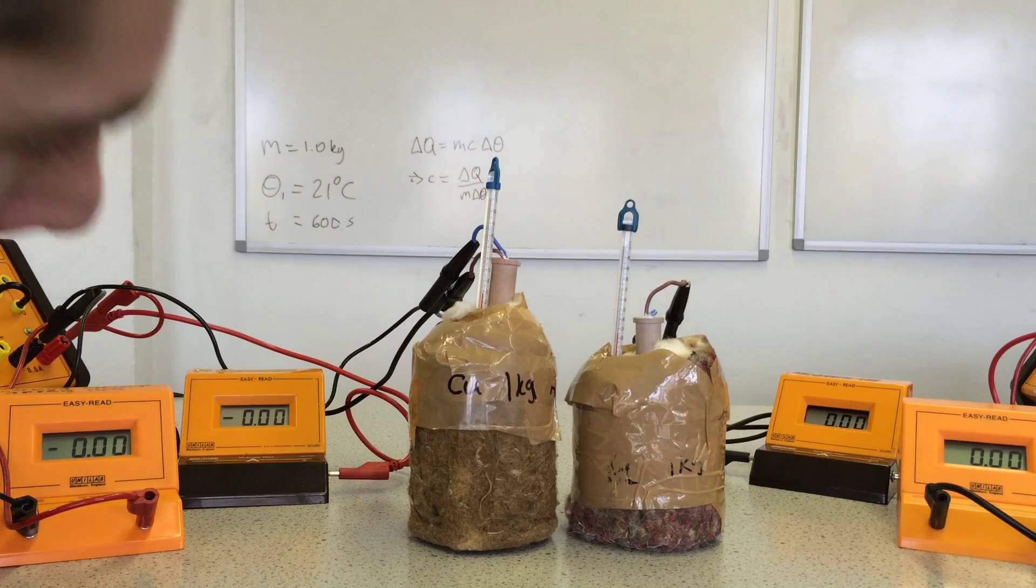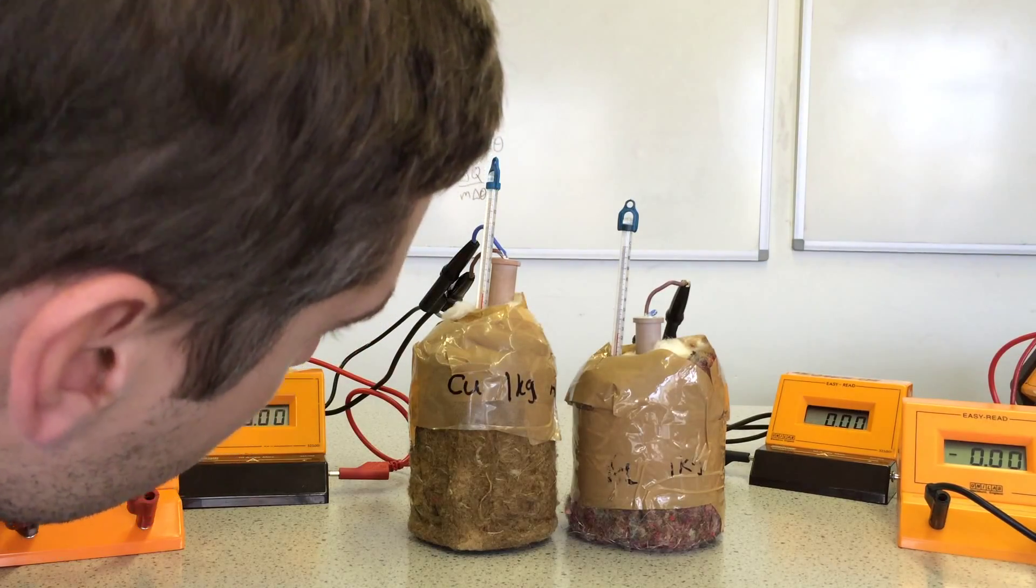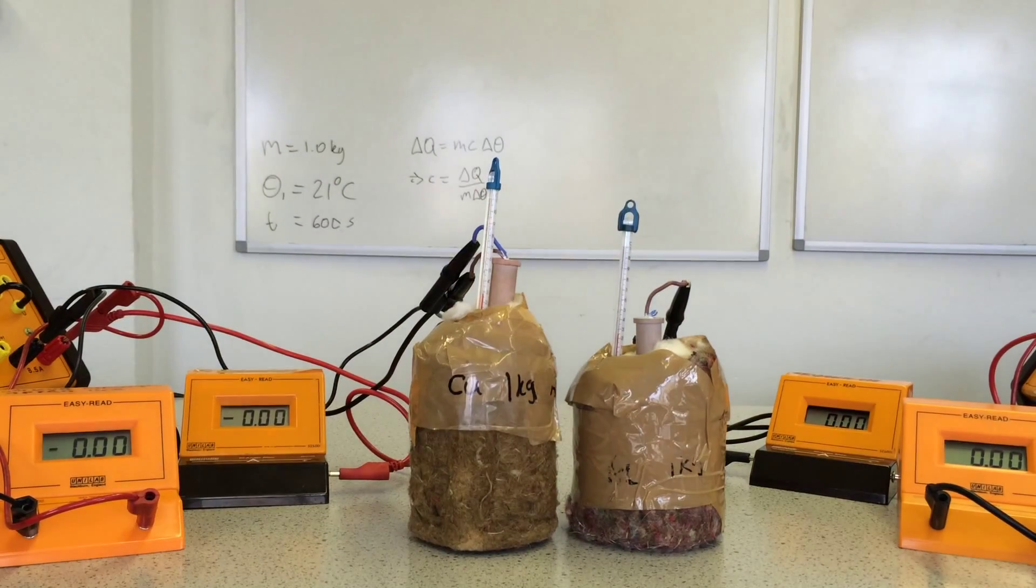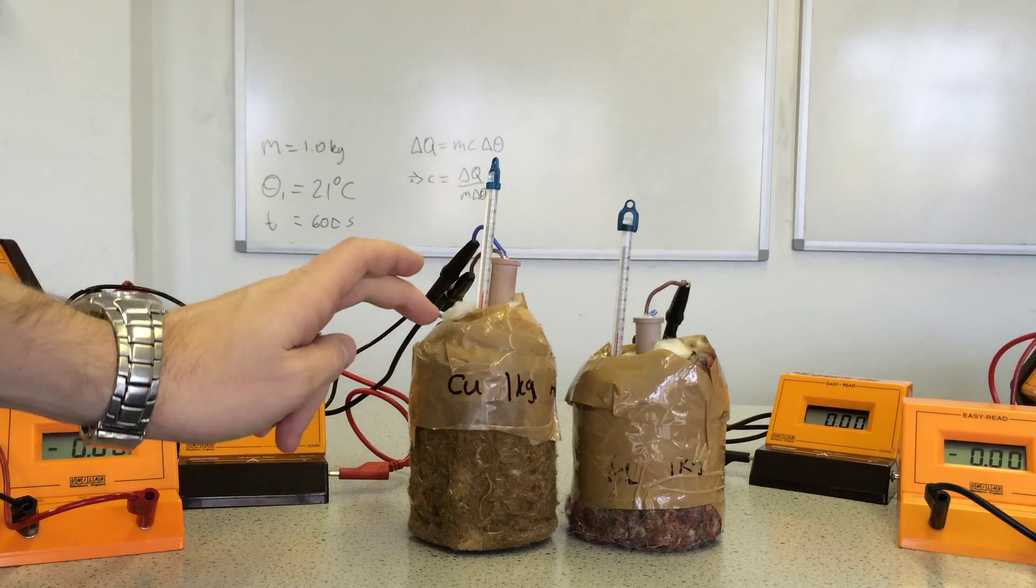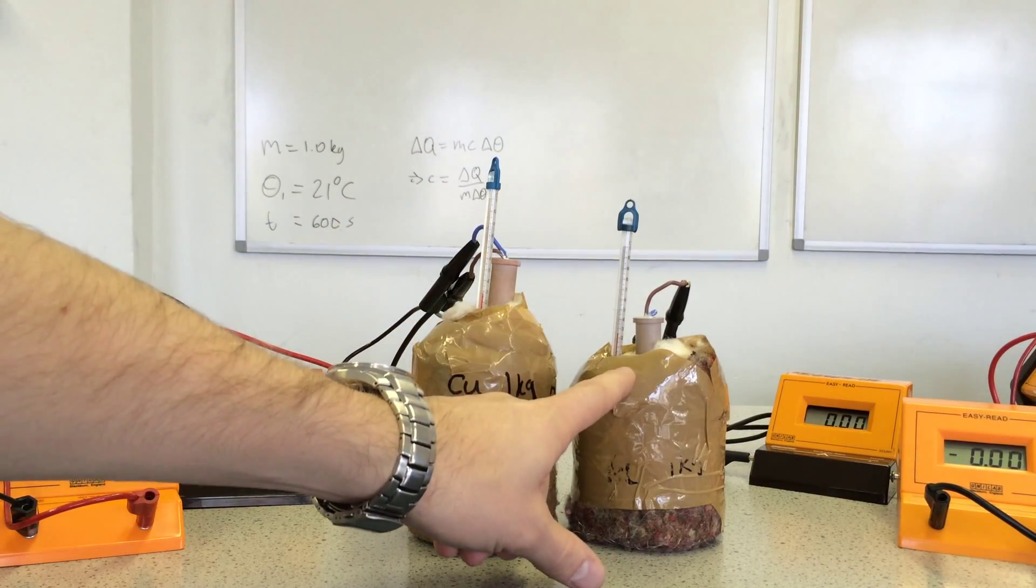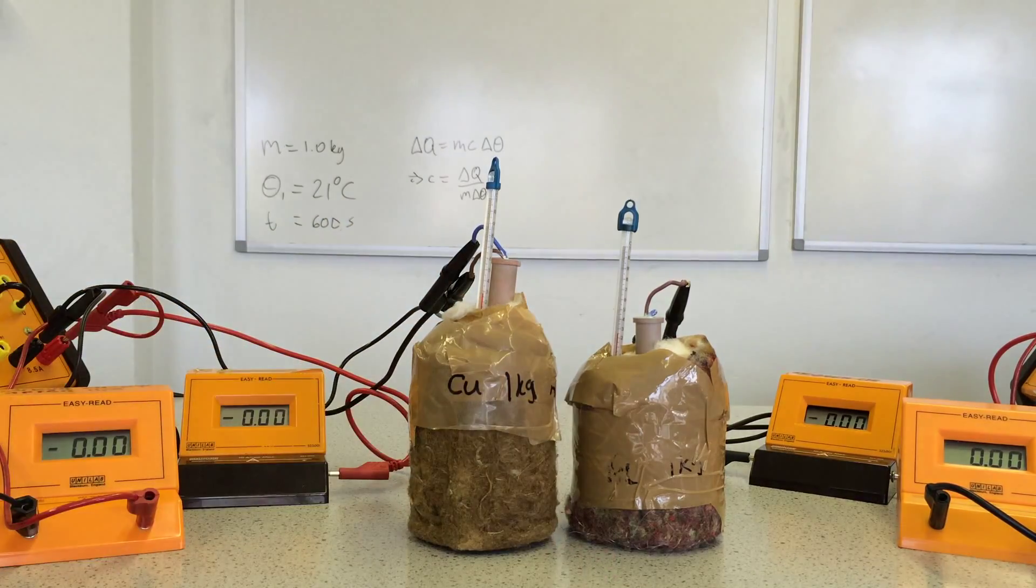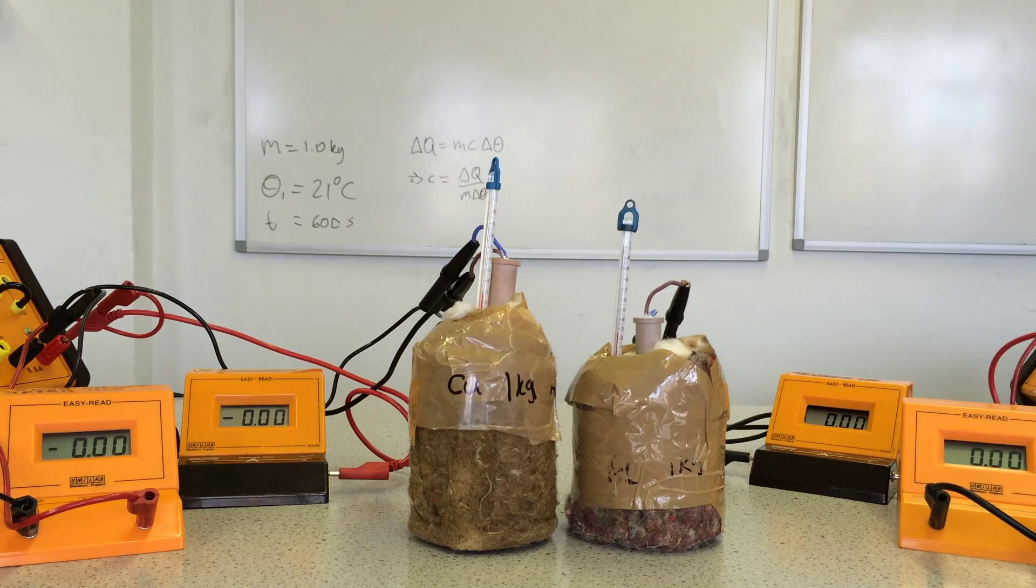Right, the temperatures appear to be on their way down now, so we've got the maximum temperature rise, which is for the copper, it was 29 degrees, for the aluminum, it was 25 degrees. Now we'll go to the calculations.